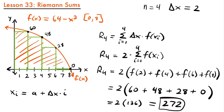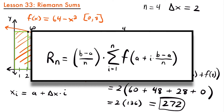So when you want to find the area under a curve or approximate it using right endpoints for rectangles, this is the formula you're going to use — the Riemann sum using right endpoints. We have delta x, which is b minus a divided by n, times the summation from 1 to n of f(x sub i), where x sub i equals a plus i times delta x.